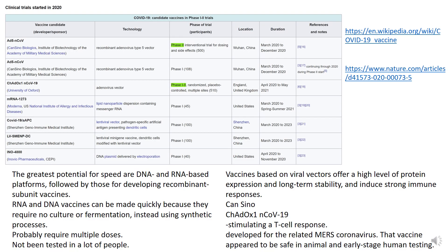Here is a list of vaccines that are already in clinical trials in humans. The DNA and RNA-based vaccine platforms are the most novel. Both of the clinical trials based on these platforms are located in the United States. The RNA vaccine is being administered by Moderna.